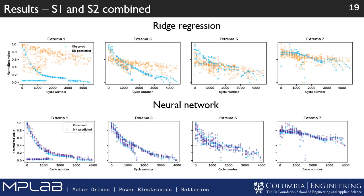How does machine learning actually perform when we feed in the pulses? For both stress factors combined, ridge regression gets the general idea — it kind of understands what's going on — but it's unable to get the full picture. Especially for extrema one it's pretty bad at estimating the two trends, though for extrema 3, 5, and 7 it does identify some trend. The neural network, however, is much, much better.